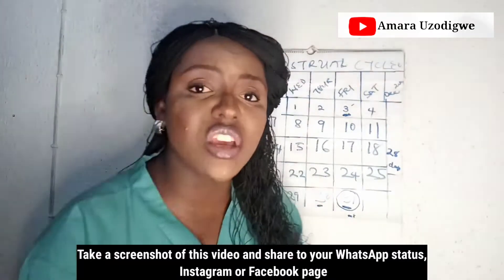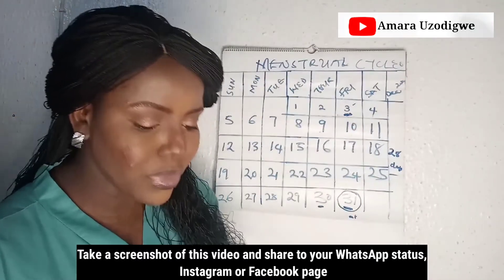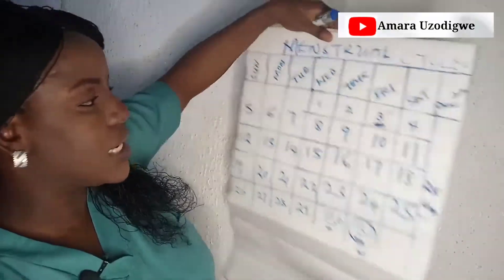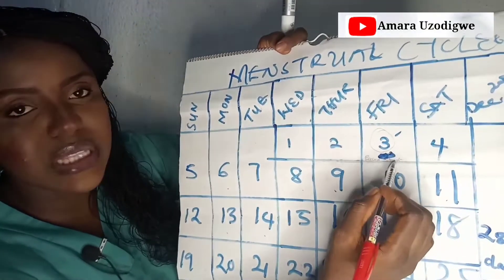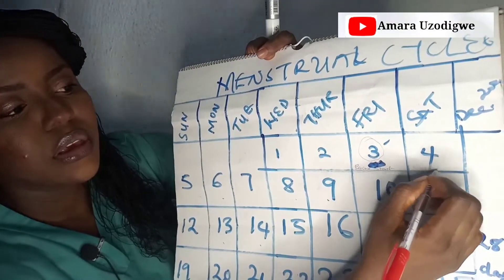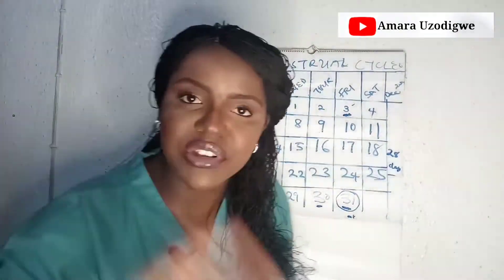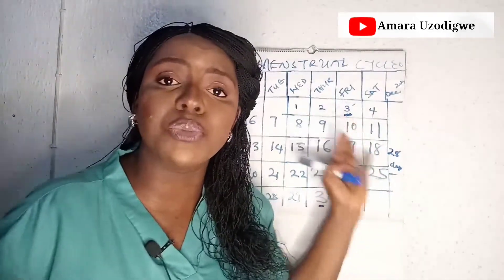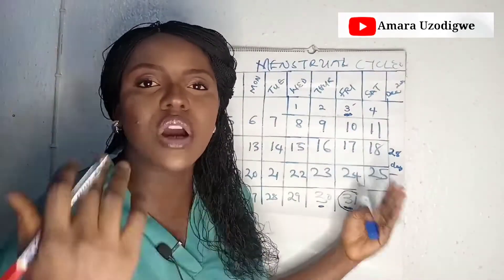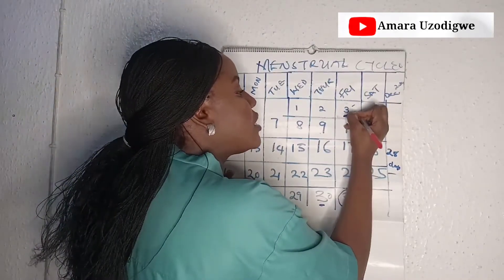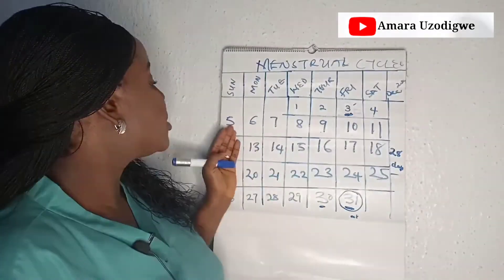Another important thing: every day during your period, write in your book. On the first day of your cycle, write 'period starts.' The next day write 'period still flowing.' Every day, write everything you feel. If on the day your period started you were feeling feverish, write 'period starts — feeling feverish.' Write your temperature, your mood, everything.